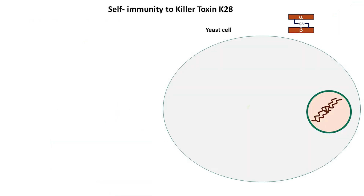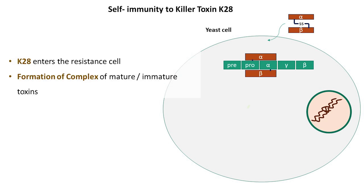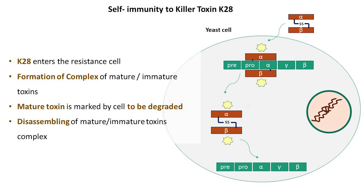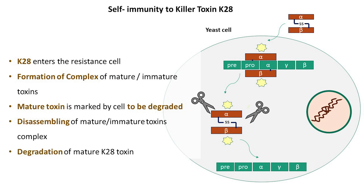In the context of K28 self-immunity, K28 enters the resistant cell, initiating the formation of a complex comprising mature and immature toxins. Subsequently, the mature toxin is marked by the cell for degradation, leading to the disassembly of the mature-immature toxin complex. This breakdown ultimately results in the degradation of the mature K28 toxin within the resistant cell.